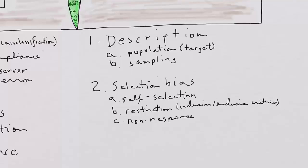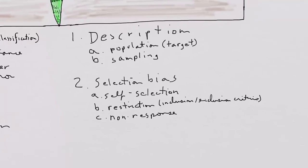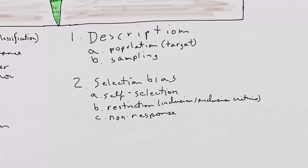Selection bias. Well if we have self-selection, if people self-select into a study, then that's a huge problem for external validity because volunteers are very often different from non-volunteers. Restriction bias has to do with inclusion-exclusion criteria and those can be assessed as to whether they are appropriate to the population that's described in number one.